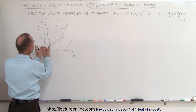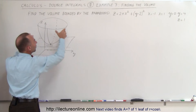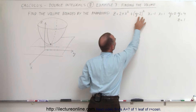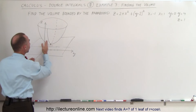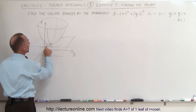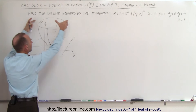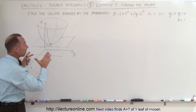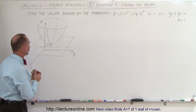We have the x squared going up this way and the y squared going in this way, but since it's the quantity y minus 2 squared, it's going to be 2 units to the right. So the vertex will be at x equals 0, y equals 2, z equals 2, opening upward.